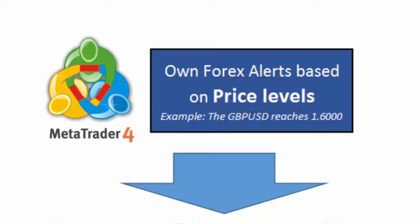Let's assume that you trade forex using a MetaTrader 4 platform loaded on your PC at home or on a laptop. The trading system you are using requires you to take certain actions when the price reaches certain price levels. In this example, we are saying that you want to be notified when the pound USD reaches 1.6000. So you have two options: you can sit watching the charts waiting for the price to reach that level, or you can set up alerts.